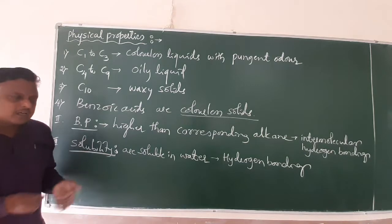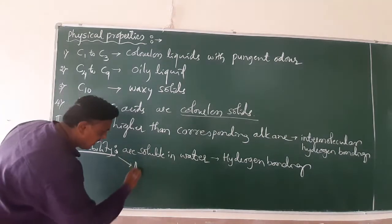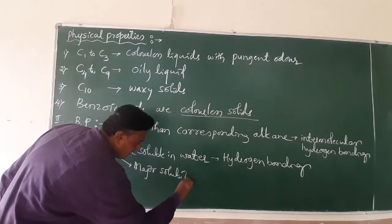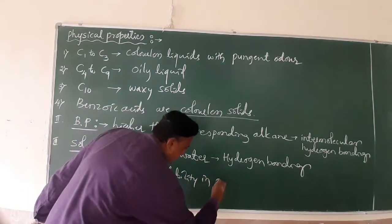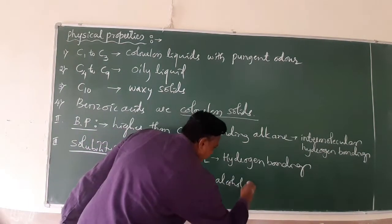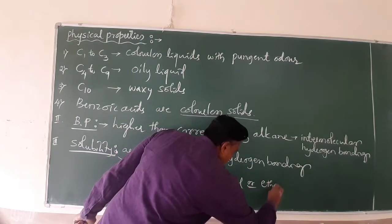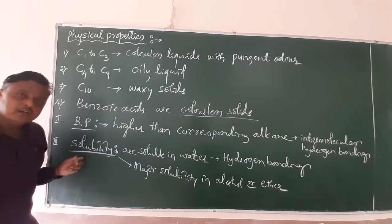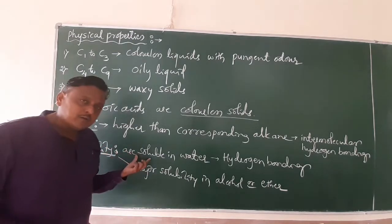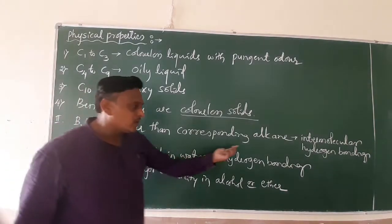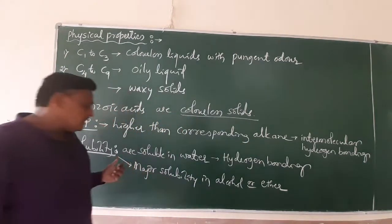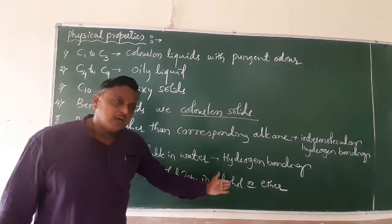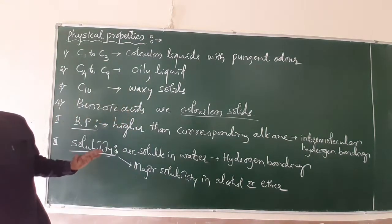All carboxylic acids show good solubility in organic solvents like alcohol or ether. Lower carboxylic acids are soluble in water due to hydrogen bonding, while higher carboxylic acids are soluble in alcohol or ether.